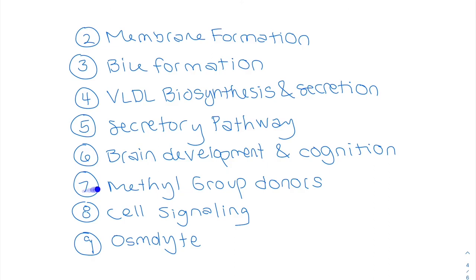Then now methyl group donors. We saw that with the homocysteine. Choline is a methyl source in the liver and the kidneys, also required for a lot of prenatal programming.